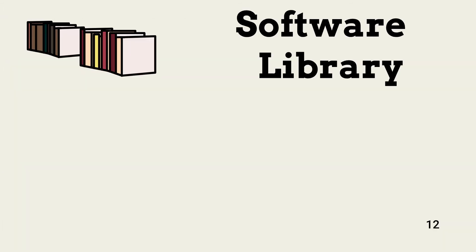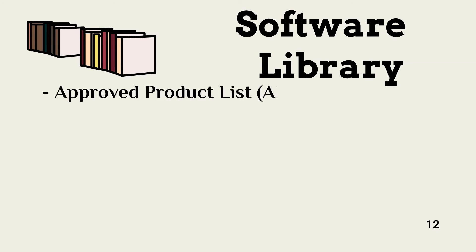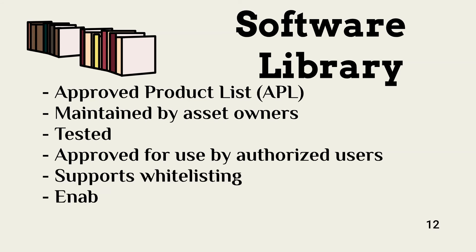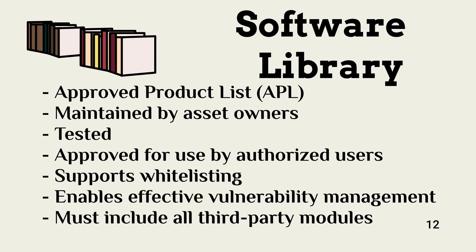Effective management of installed applications requires a well-maintained software library. The software library is likely the responsibility of a centralized authority, but it relies on asset owners to keep it updated. It consists of a list of all tested and approved applications and includes the users authorized to use each application. Maintaining a library supports the use of whitelisting, which is implemented by preventing users from installing any application except those in the approved software library. Understanding the applications installed and the related versions helps security identify and manage vulnerabilities, including tracking all third-party modules used in internally developed applications.